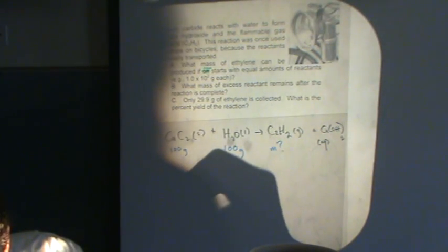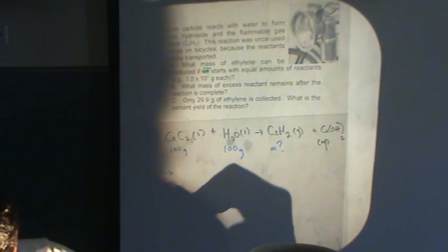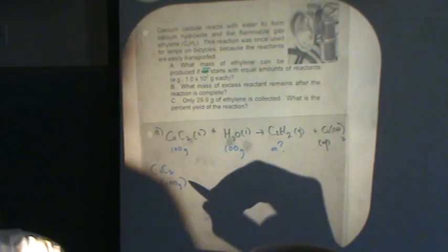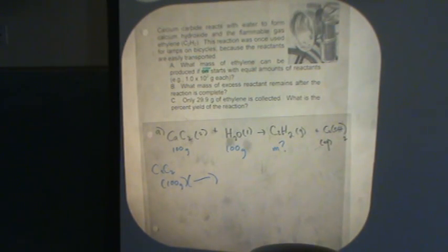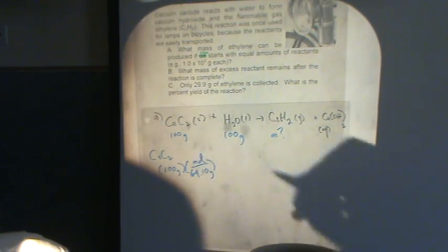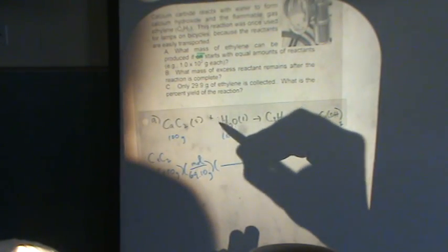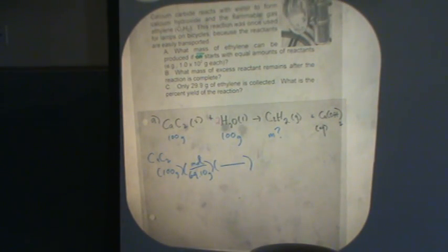So let's start with CaC2 first. And there's 100 grams of that, of the CaC2. We need to change that to moles, because I need to go to moles so I can use a molar ratio and find the mass of the C2H2. So let's do that. That's 64.10 grams per mole. That's moles of CaC2. And then I need my molar ratio. I better double check that this is balanced. It's not quite. I think I need a 2 right here, and that'll do it.